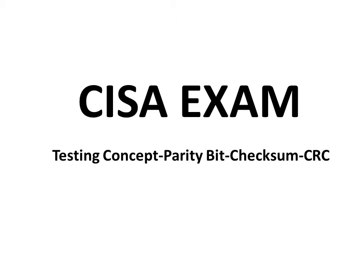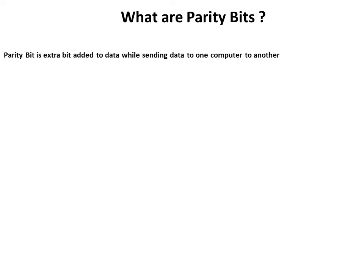This video deals with testing concepts on parity bit, checksum, and CRC. Parity bits are an extra bit added to data while sending data from one computer to another. For example, in the data sent here, the parity bit will be one because there are four one-bits in this particular data — that is even, hence the parity bit will be one.